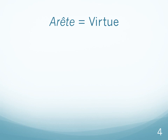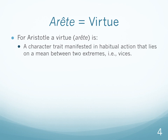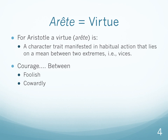The focus of Aristotle's ethics are virtues. The Greek term for virtue is erite — a character trait manifested in habitual action that lies on a mean between two extremes. The virtue is the midpoint or balance between two extremes; on either extreme there are vices. For instance, courage is the midpoint we should strive for. If you have too much, you are foolhardy or foolish; if you don't have enough courage, you're cowardly.